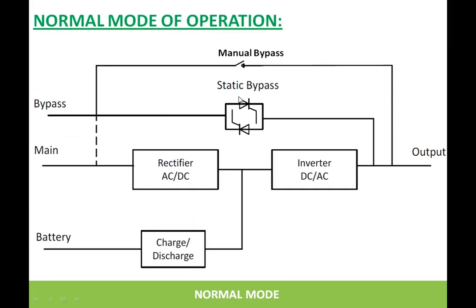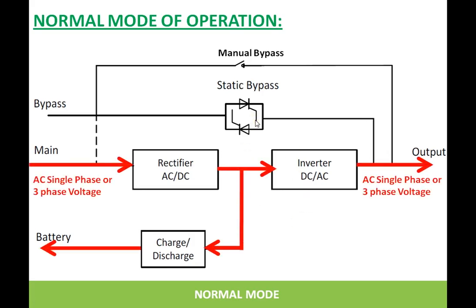This is the normal mode. Whenever the UPS is in a healthy condition, this is the mode that the UPS is in. The red color arrow shows the power flow: mains through the rectifier, then the inverter, and to the output. At the same time, the rectifier output is used for charging the battery.